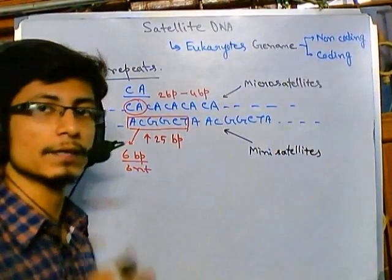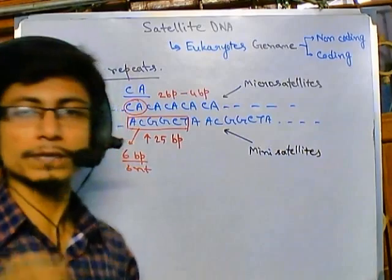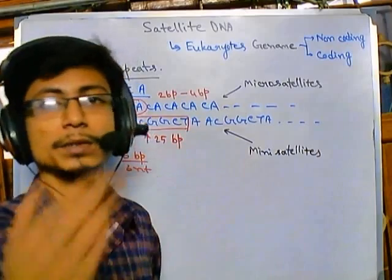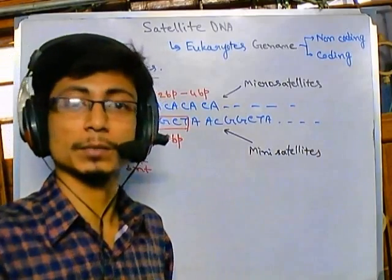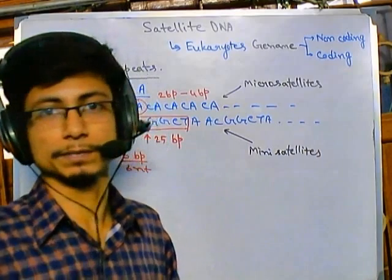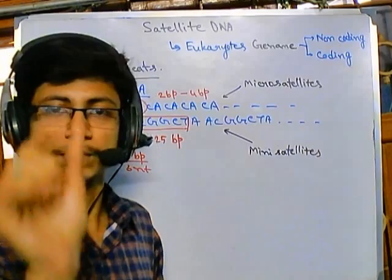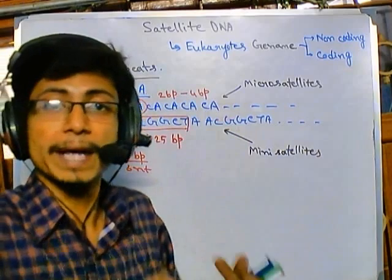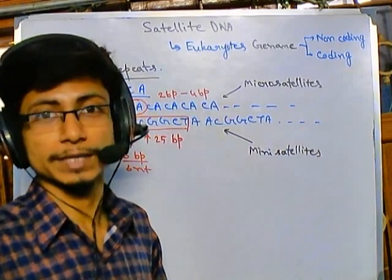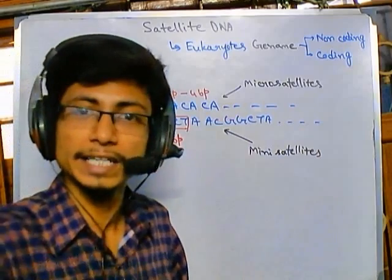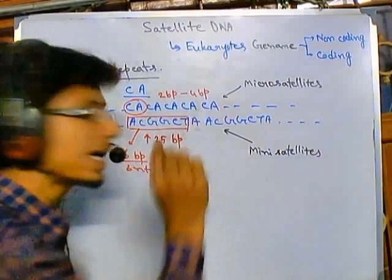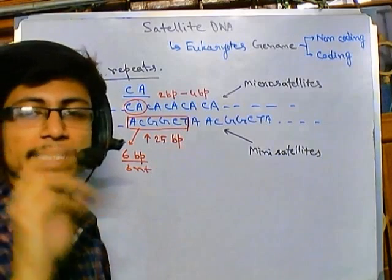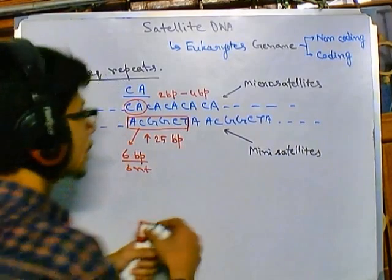These are the two major types of satellite sequences found in our genome. The beauty of these repeat sequences is that they can vary from person to person. As they vary between individuals, they give rise to what is called polymorphism. For example, at a particular locus you may have a CA repeat four times, while I may have it three or eight times — these are variations between your genome and mine.